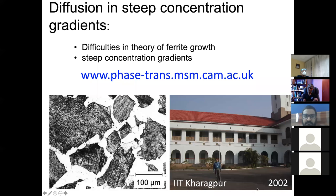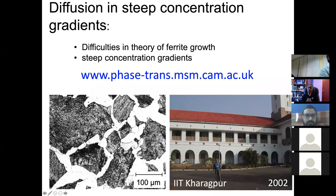My talk today is about diffusion in very steep concentration gradients. The reason I went into this in detail is because I think there is a serious problem with some of the theory we use in calculating, for example, the growth rate of ferrite. There is more information on a website link which will appear later. You can download the actual presentation from the link on the chat box.